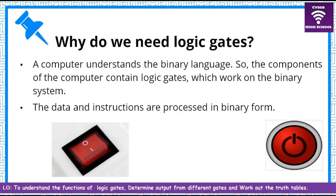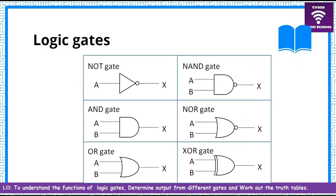Why do we need gates? A computer system understands binary language. I have done a video on the channel about binary number systems — I highly recommend you watch it, as it helps you understand how binary systems work. Throughout this video we'll look at six main gates: the NOT gate, the AND gate, the OR gate, the NAND gate, the NOR gate, and finally the XOR gate.